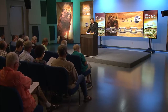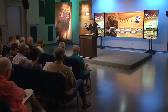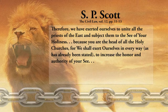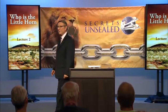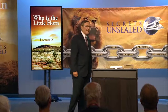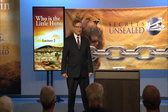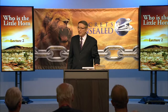Notice the statement made by Emperor Justinian about the pope — he was writing a letter to Pope John: 'Therefore, we have exerted ourselves to unite all the priests of the east and subject them to your holiness, because you are the head of all the churches, for we shall exert ourselves in every way to increase the honor and authority of your see.' What's significant is that the emperor is saying the state is going to put forth all effort to make sure everybody obeys the pope as head of all the churches.